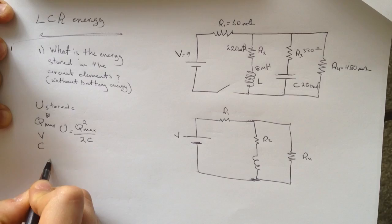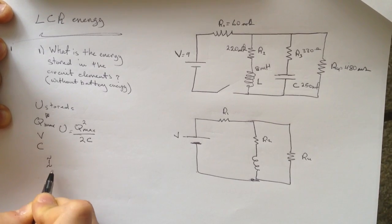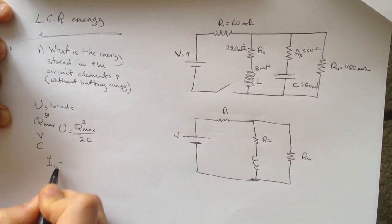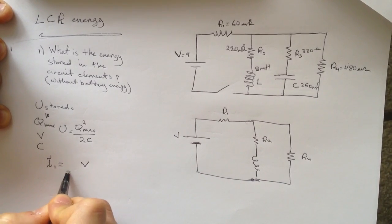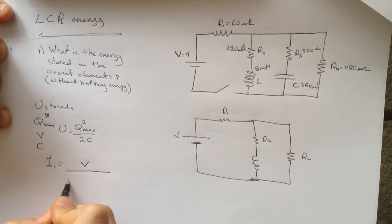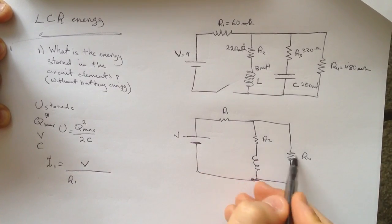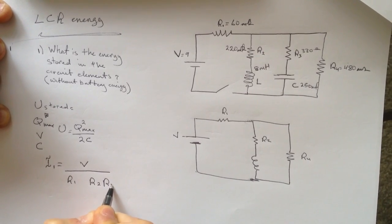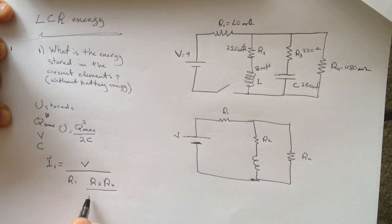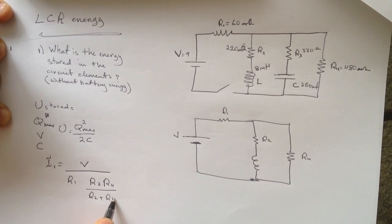So the I, that is I1, it will be the voltage over, this is in series, R1, and these two are in parallel. So it's R2, R4, over R2, plus R4.